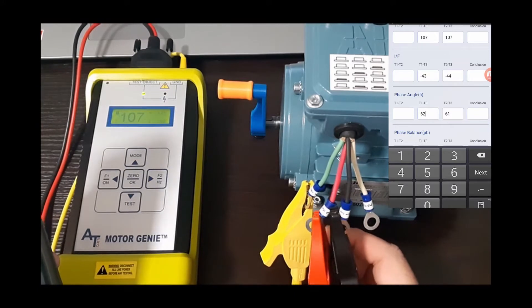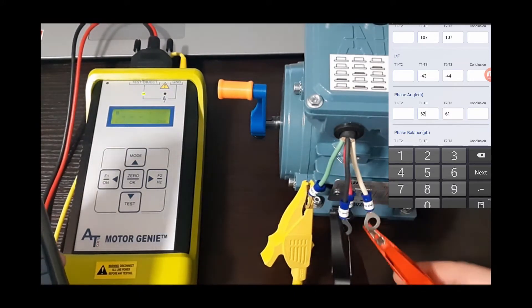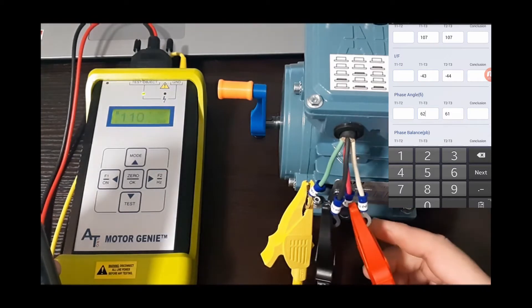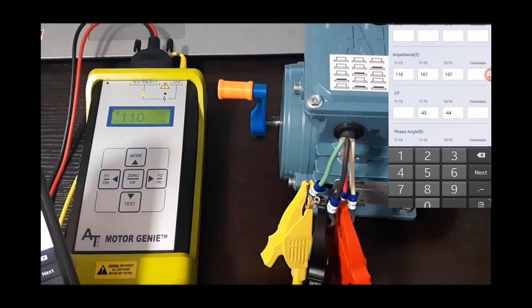So now we're going to go to 1-2 so I'm going to switch the red over. Here and we've got 110 for our impedance.